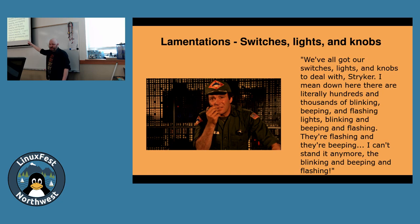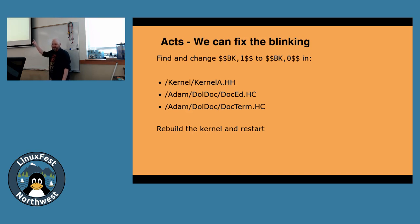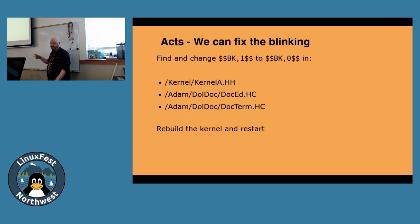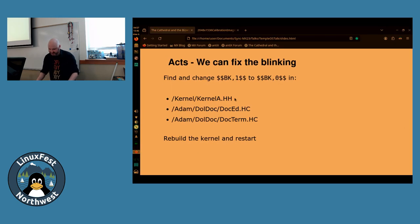We can fix the blinking. That custom document format called DolDoc uses dollars as its delimiter, and bk,1 is the blink tag. If you go through three files and change the bk,1 to bk,0 in just three or four places, you can rebuild the kernel and restart, and the blinking goes away. It's calmer, it's better to interact with. I'm going to try to demonstrate what that might look like — cross your fingers.